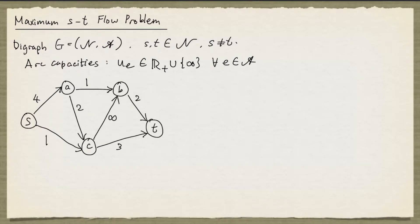We're going to look at the maximum s-t flow problem. The problem is specified as follows: we are given a digraph G such that it has two distinguished nodes, s and t. An arc capacity given by u for each arc E. An arc capacity is either a non-negative real number or infinity.